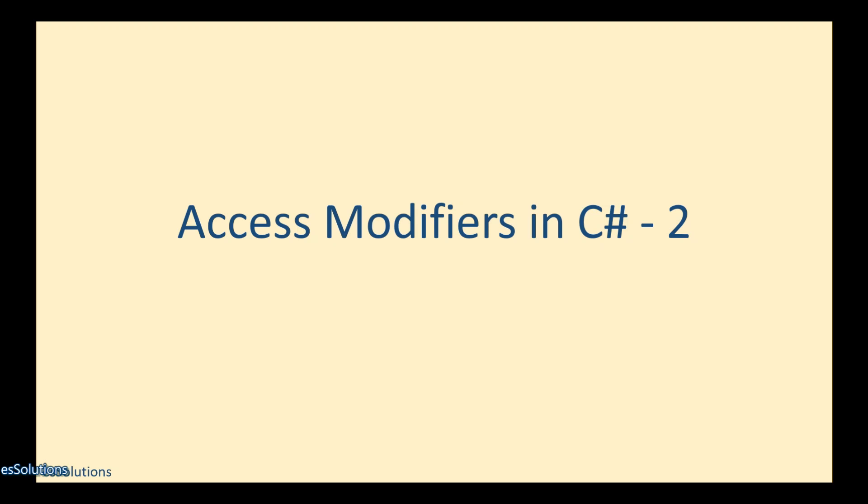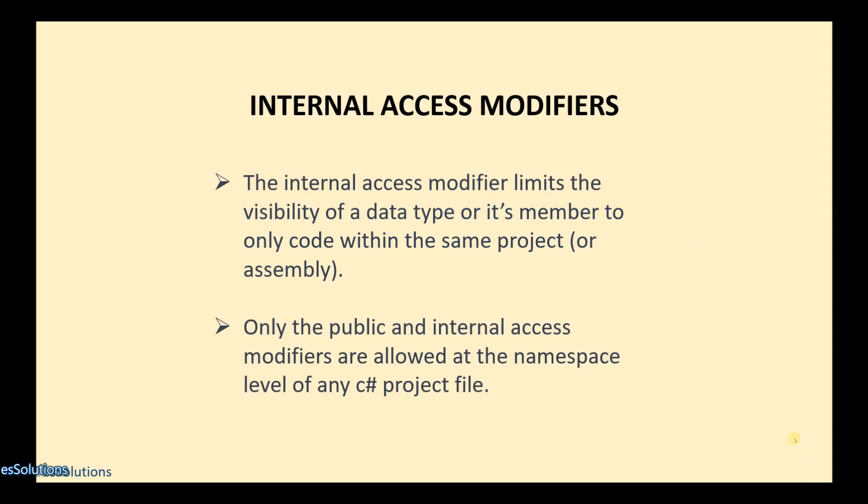Welcome back to this video, a continuation of the C# beginner series. If you are new here, kindly subscribe and click on the notification bell to be updated when new videos come out. Previously in this series we looked at access modifiers — the public and private access modifiers. If you missed that, please go back to that video before continuing. In this video we'll be looking at the internal access modifier and the protected access modifier.